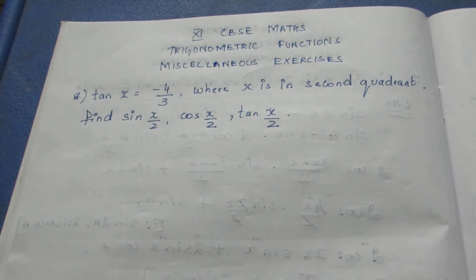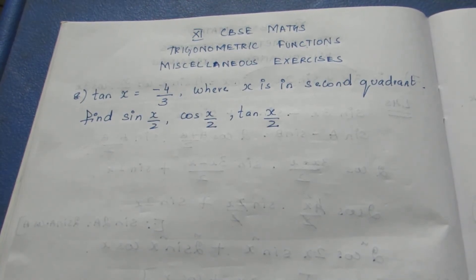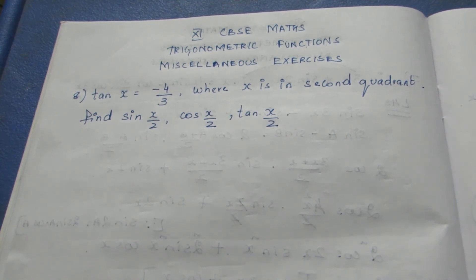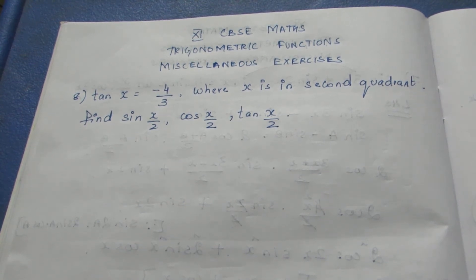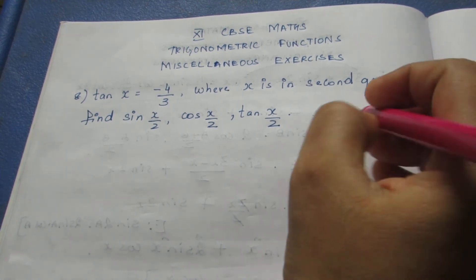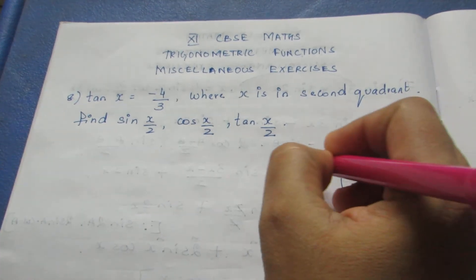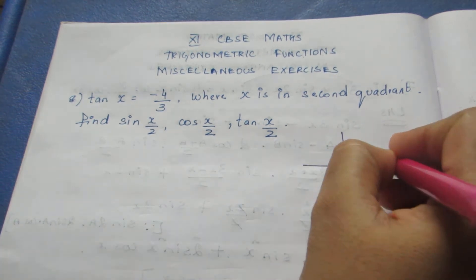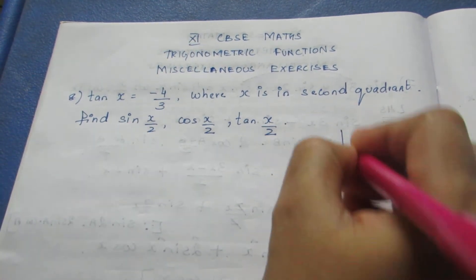Hello viewers, I am Aitli. Today we are going to see 11 CBSC max trigonometric function miscellaneous exercise question number 8. The question is: tan x is equal to minus 4 by 3, where x is in the second quadrant.